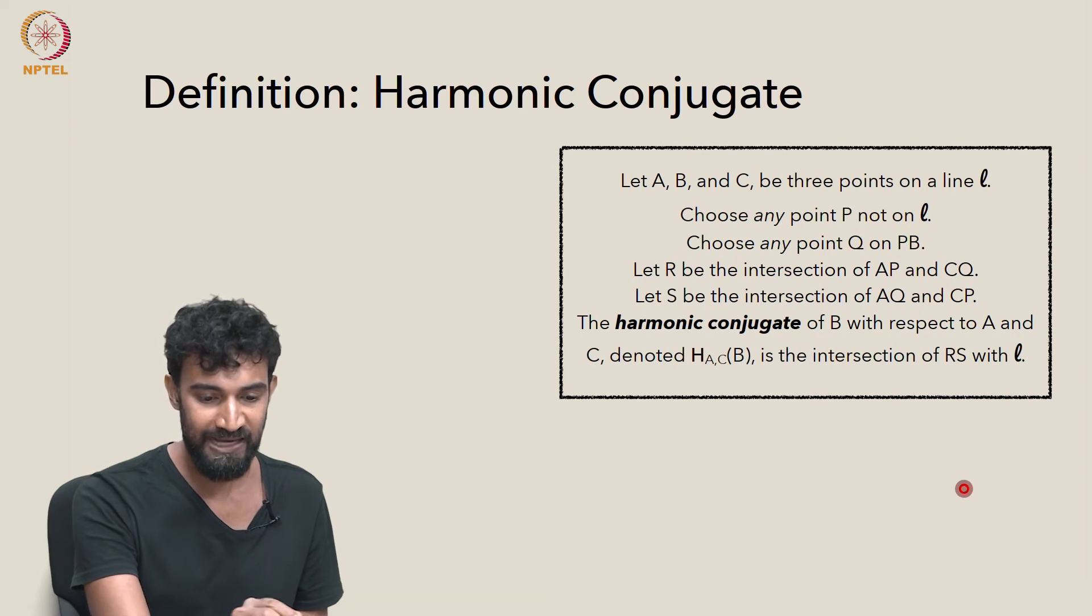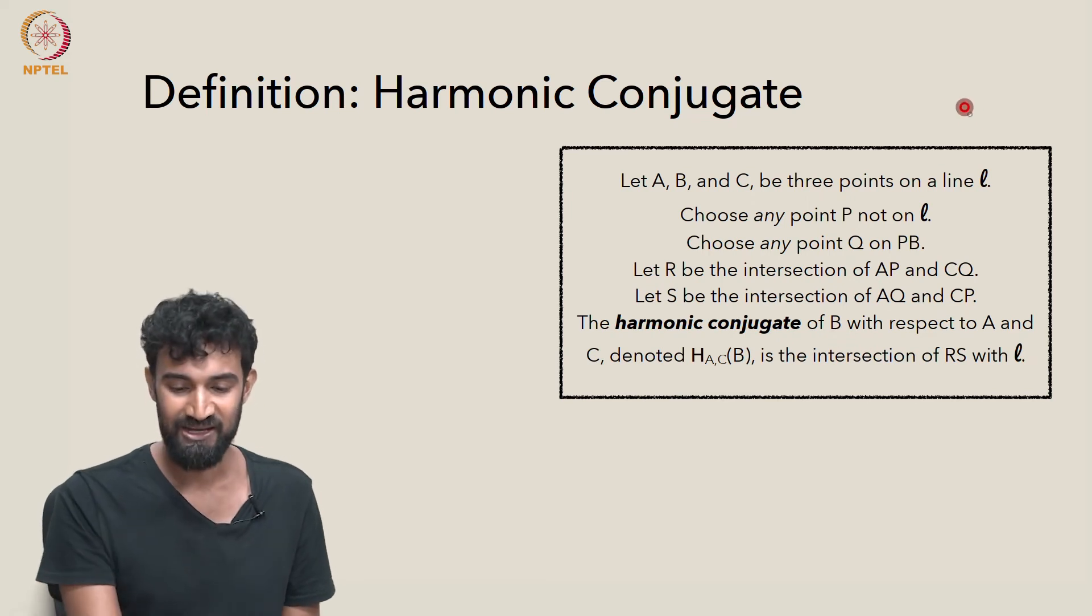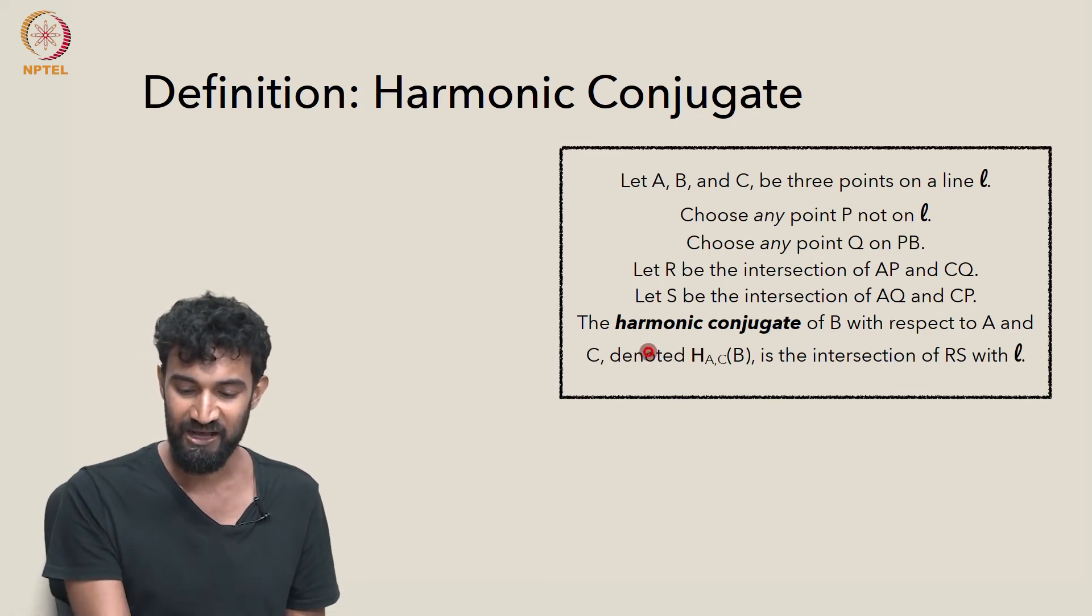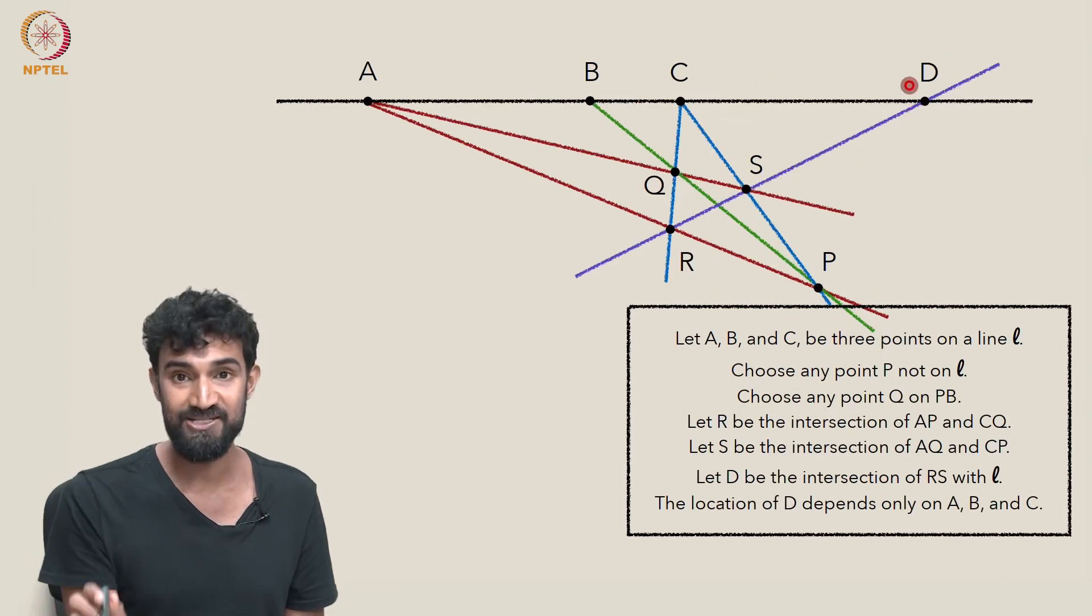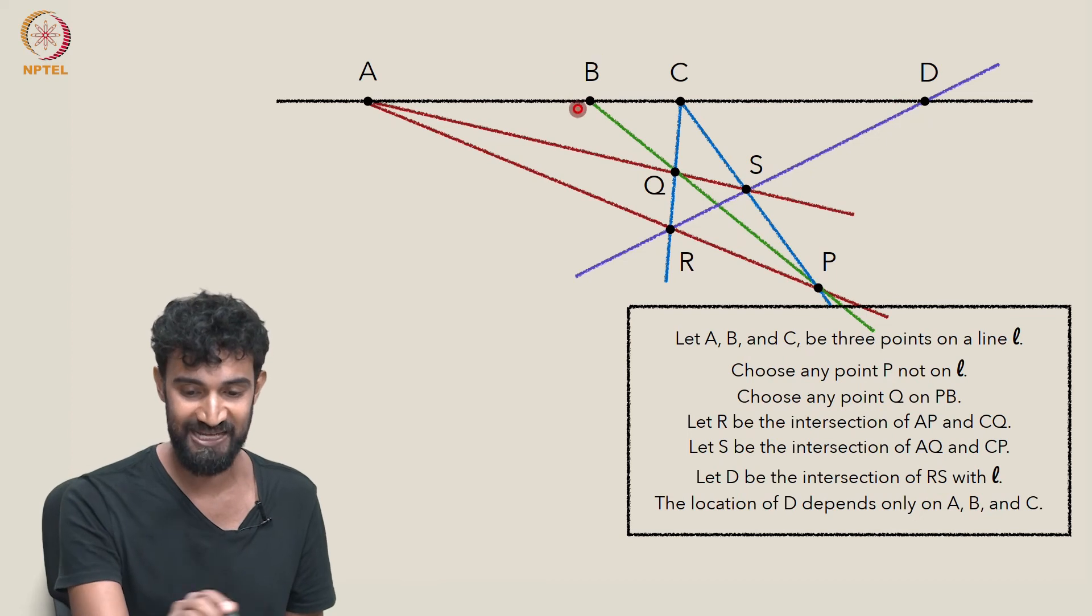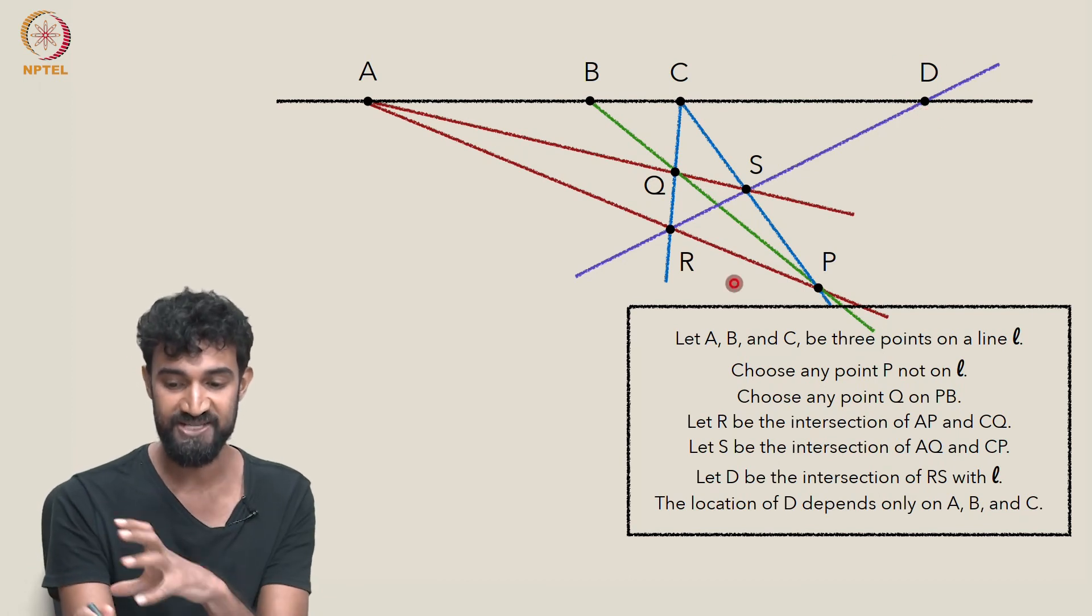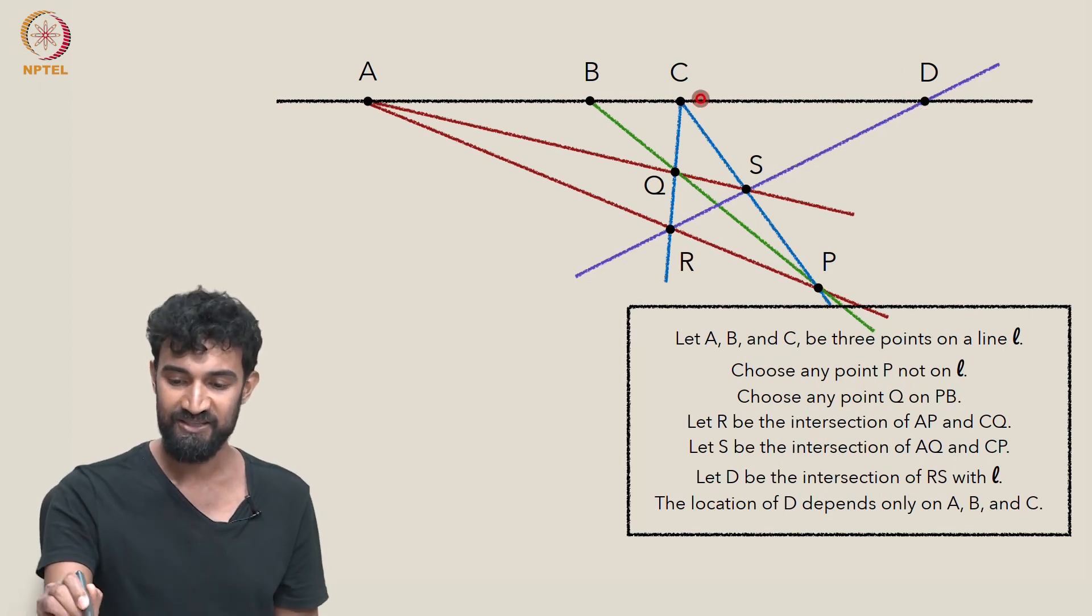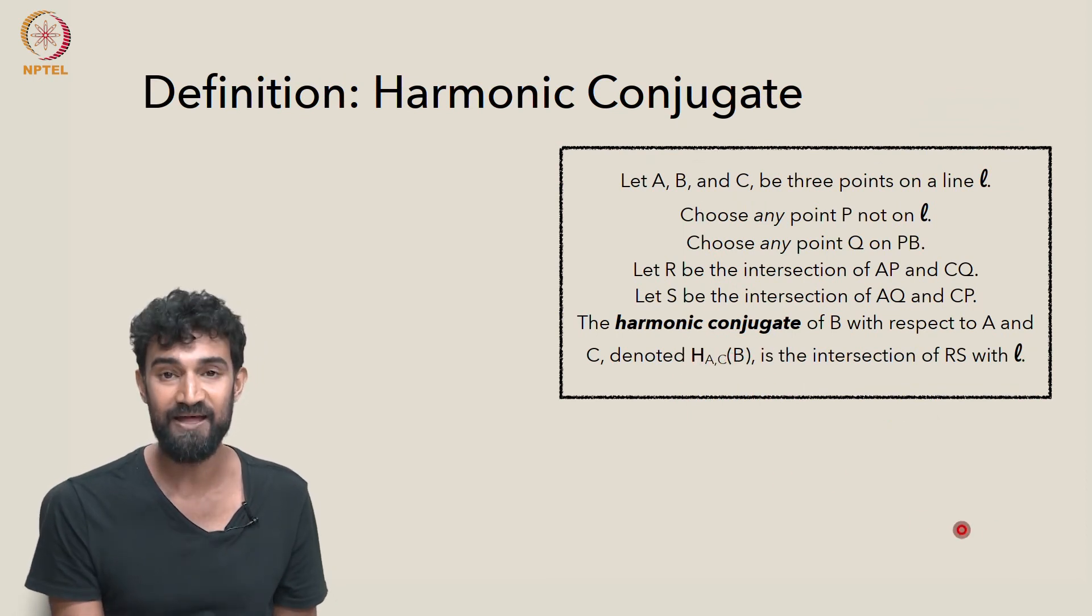So now I want to make a definition, the harmonic conjugate. And basically, if we follow this construction, the harmonic conjugate, this point D that we constructed is known as the harmonic conjugate of B with respect to A and C. And it's denoted HAC of B. So this point D is the harmonic conjugate of B with respect to A and C. So if you believe that this construction is true, and this D is independent of all these choices and only depends on A, B, and C, then we might as well give it a name that makes it clear that it's dependent on A, B, and C. And that's the harmonic conjugate.